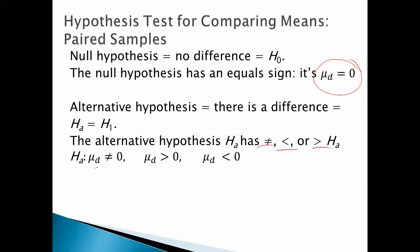it's got one of those signs in it, so it'll be of this form. Mu sub d is either not equal to zero, greater than zero, or less than zero.